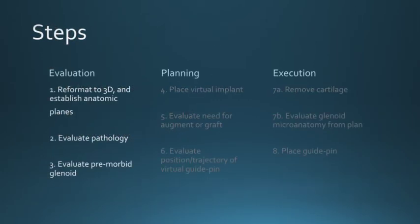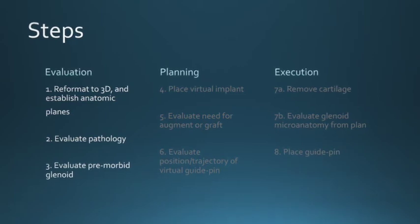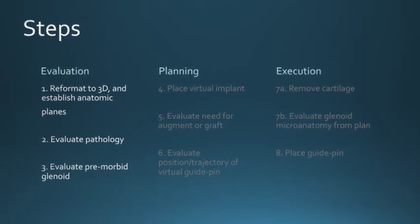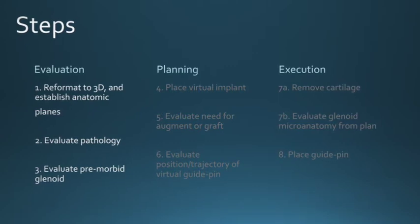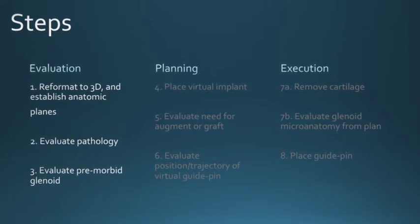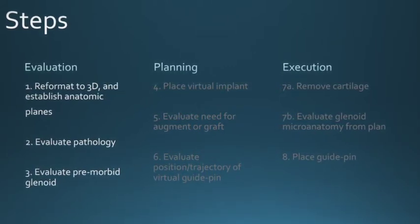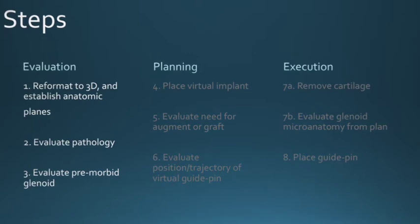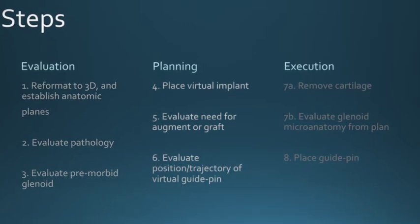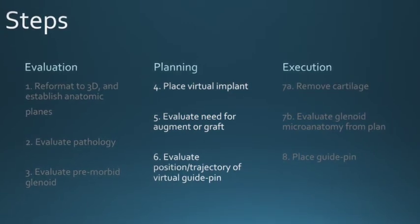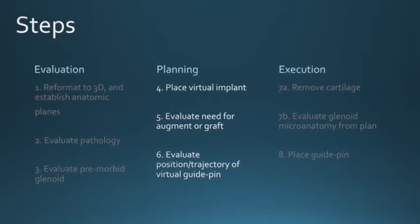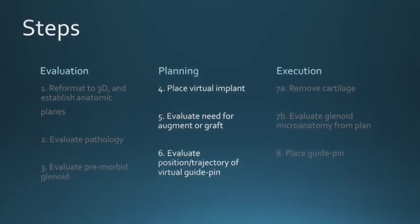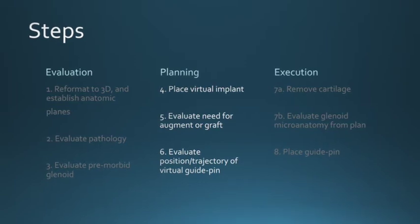Three-dimensional planning can be broken down into three broad categories: evaluation, which begins with 3D reformatting, establishing anatomic planes, evaluating pathology, and evaluating the pre-morbid glenoid; preoperative planning itself, which includes placing the virtual implant, evaluating the need for an augment or graft, and evaluating the position and trajectory of the virtual guide pin.